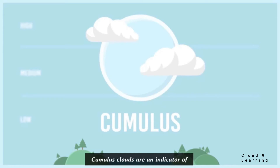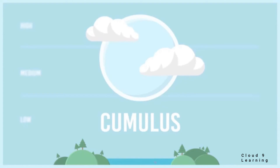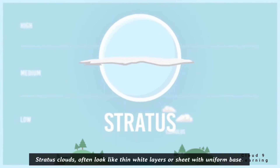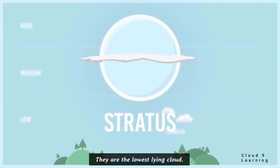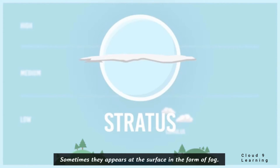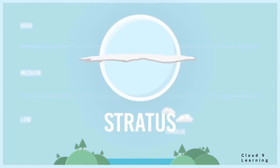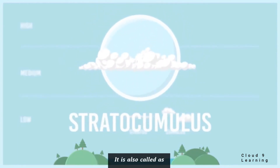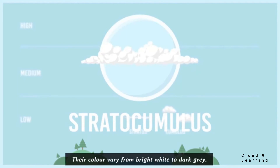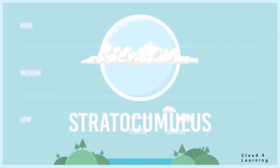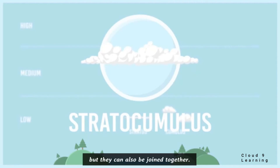Cumulus clouds are an indicator of fair or pleasant weather. Stratus clouds often look like thin white layers or sheets with a uniform base; they are ash or gray to nearly white in color and are the lowest-lying clouds. Sometimes they appear at the surface in the form of fog. Stratocumulus, also called cumulus stratus, are characterized by large dark rounded masses, usually in groups, lines or waves. Their colors vary from bright white to dark gray, and they are the most common clouds on Earth, usually with gaps between them.